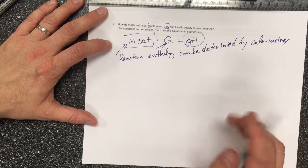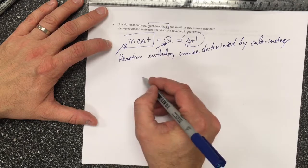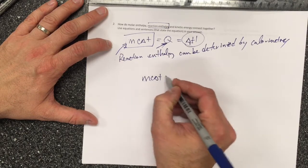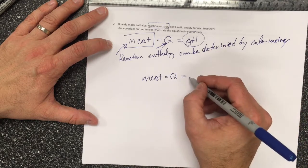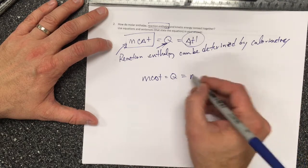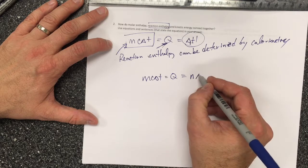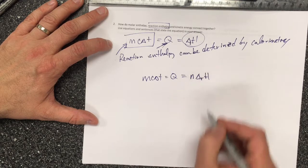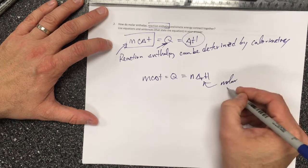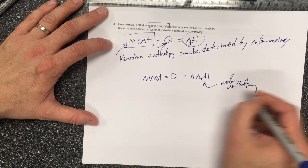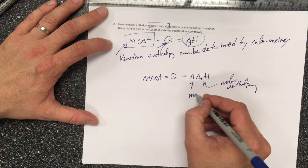The mcΔT that equals Q is related to the molar enthalpy, because the number of moles of a chemical that react times the molar enthalpy—so n times ΔH, where n is moles or chemical amount—